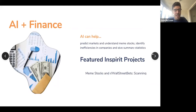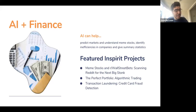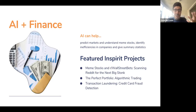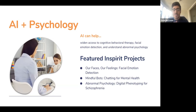AI and finance — predicting the stock market is obviously a pretty valuable thing if you can do it accurately and consistently, so it's a major focus of artificial intelligence. AI and psychology — making sure AI can detect what mental health conditions someone might have and how to treat mental health issues. There are AI therapy chatbots — a little uncanny valley — but they exist and are proven to be fairly effective if the participant is willing and able to engage.